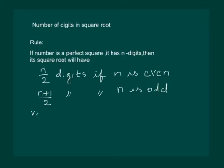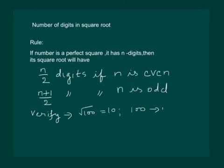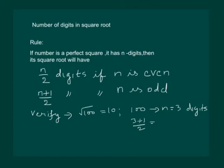Let us verify. We know that the square root of 100 is 10. But 100 has n equal to 3 digits. Then according to our rule, it should have (3+1)/2 digits in its square root. It comes out to be 2, and hence verified — it has 2 digits in its square root.